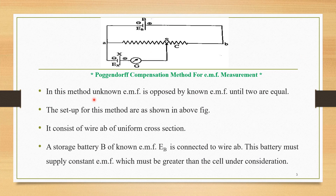In this method, unknown EMF is opposed by known EMF until the two are equal. This is the basic important point of this method — two EMFs are there, one is a known EMF and the second is an unknown EMF. These two EMFs are opposed to each other until they are equal. The setup for this method is as shown in the figure above.